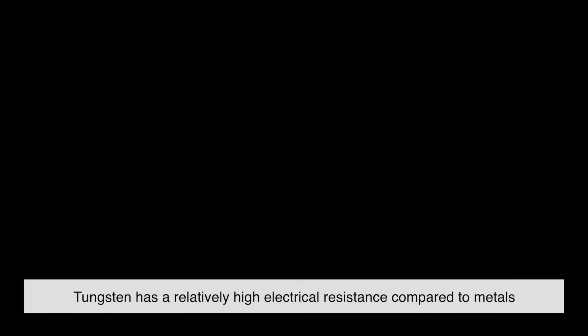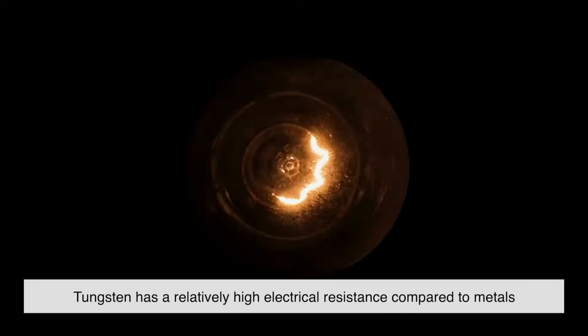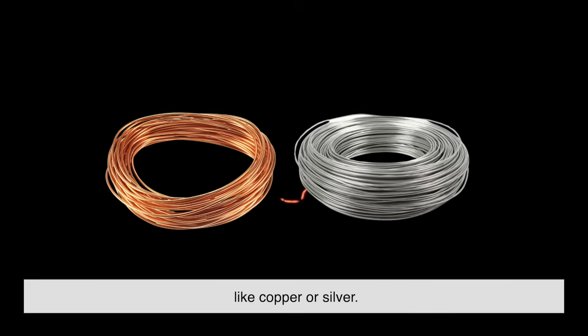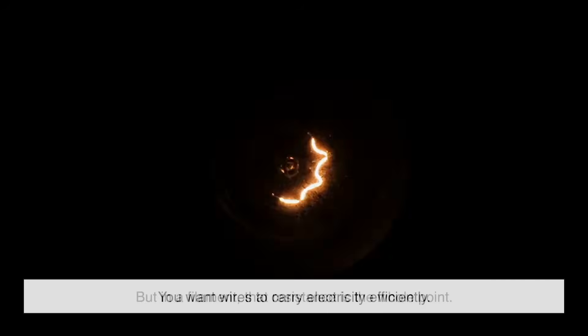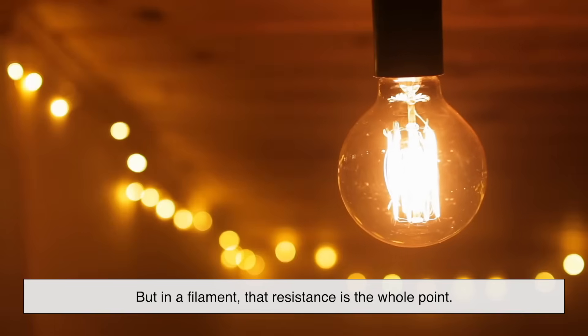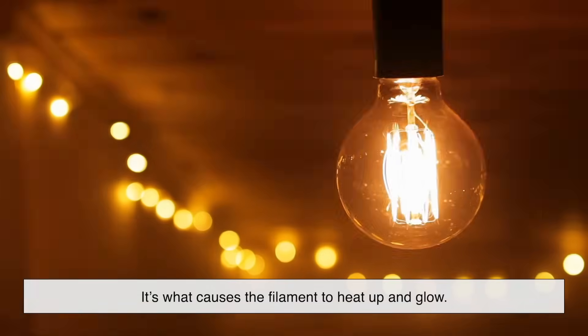Tungsten has a relatively high electrical resistance compared to metals like copper or silver. Normally, high resistance is a bad thing in wiring. You want wires to carry electricity efficiently. But in a filament, that resistance is the whole point. It's what causes the filament to heat up and glow.